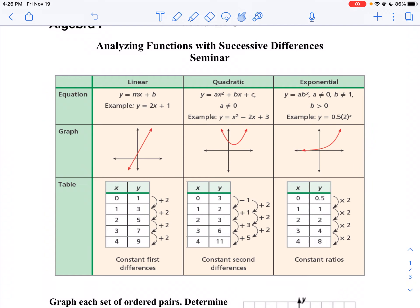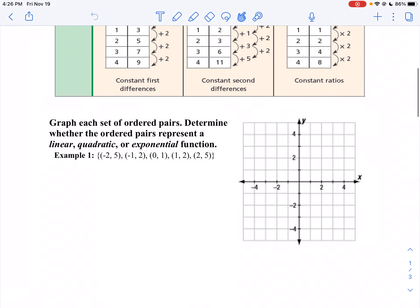So let's take a look at a couple problems and a couple ways we're going to do this. First, we're going to graph. Take a look at a graph here. So I've got negative 2 and 5, negative 1 and 2, 0 and 1, 1 and 2, and 2 and 5.